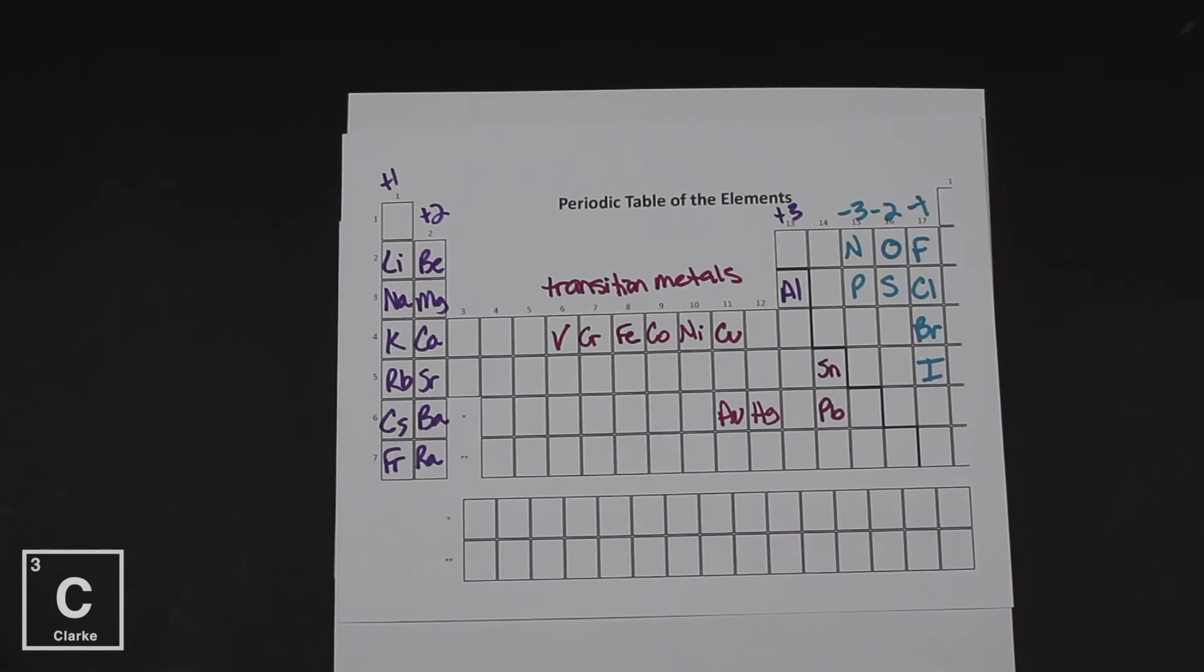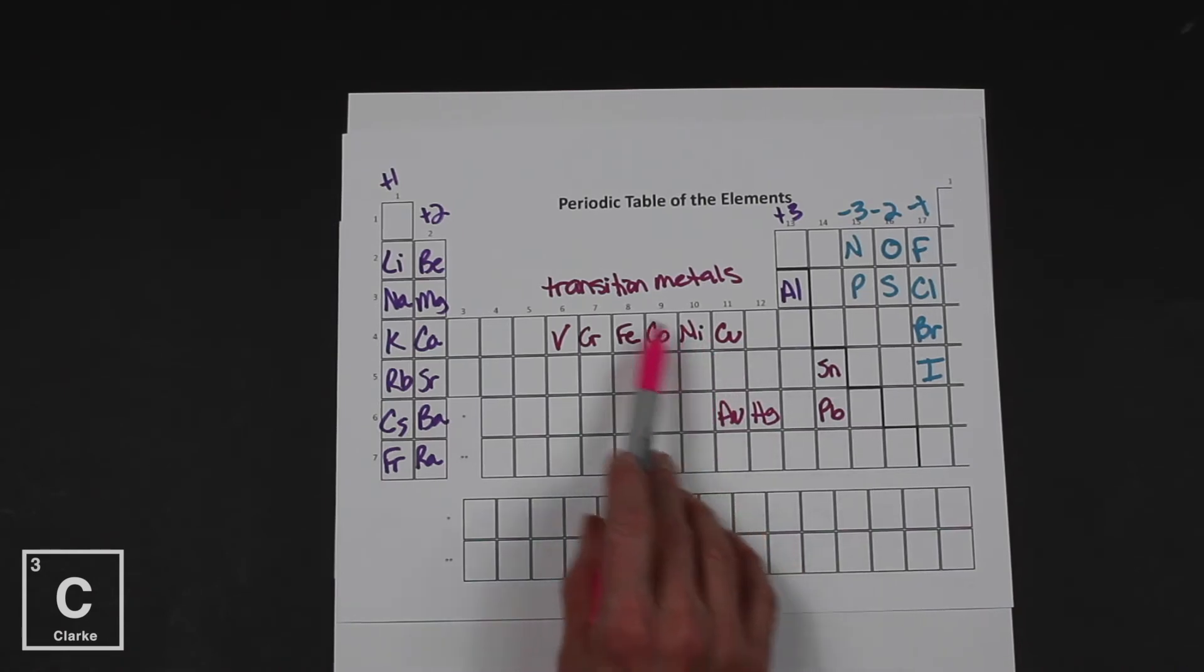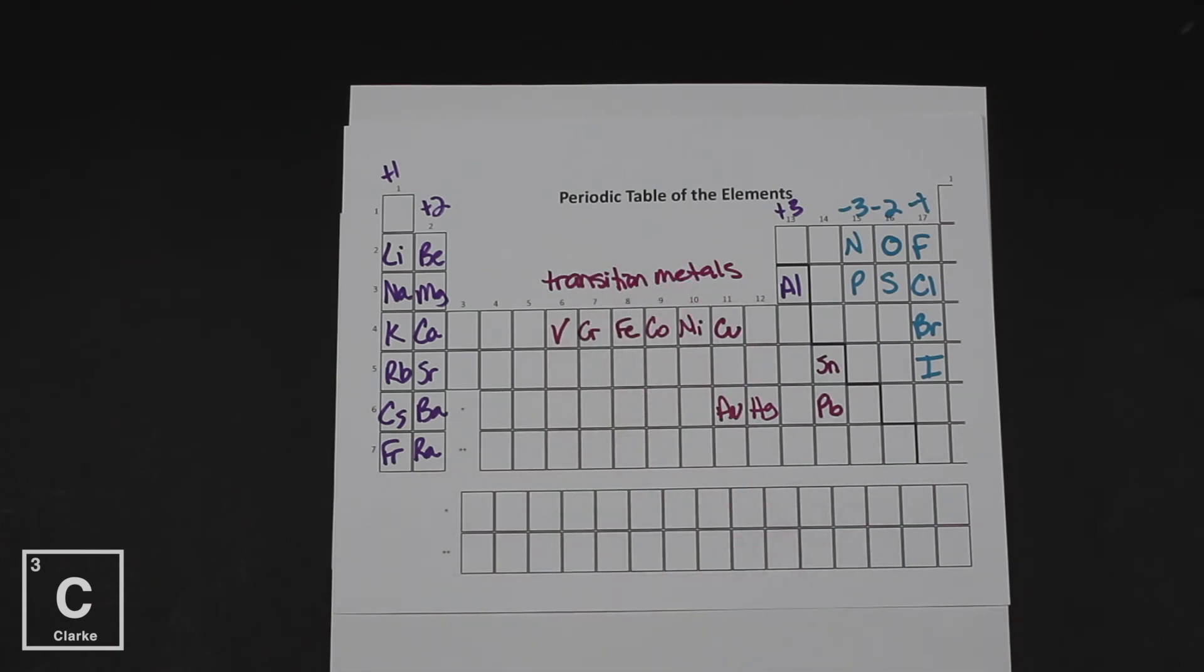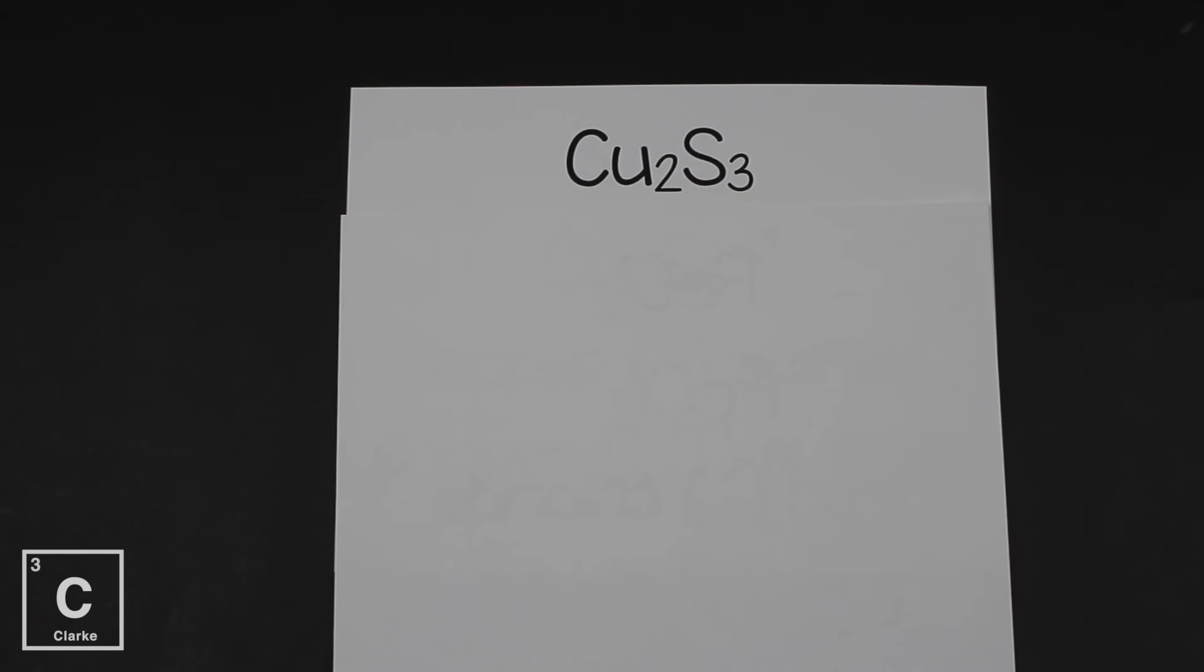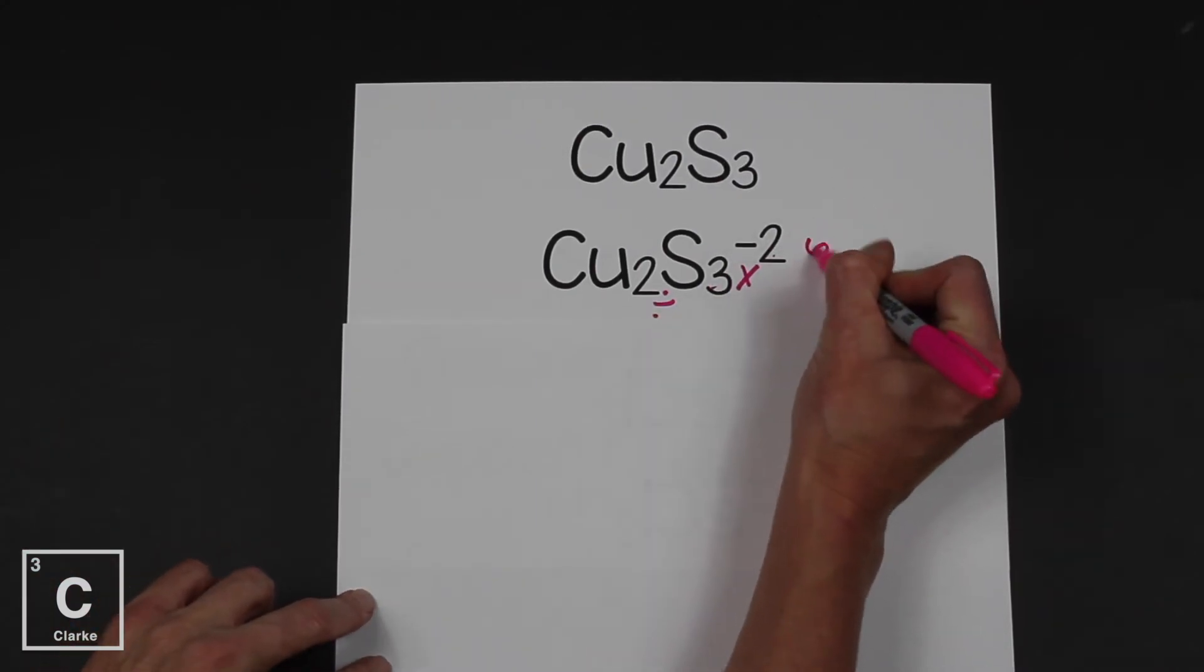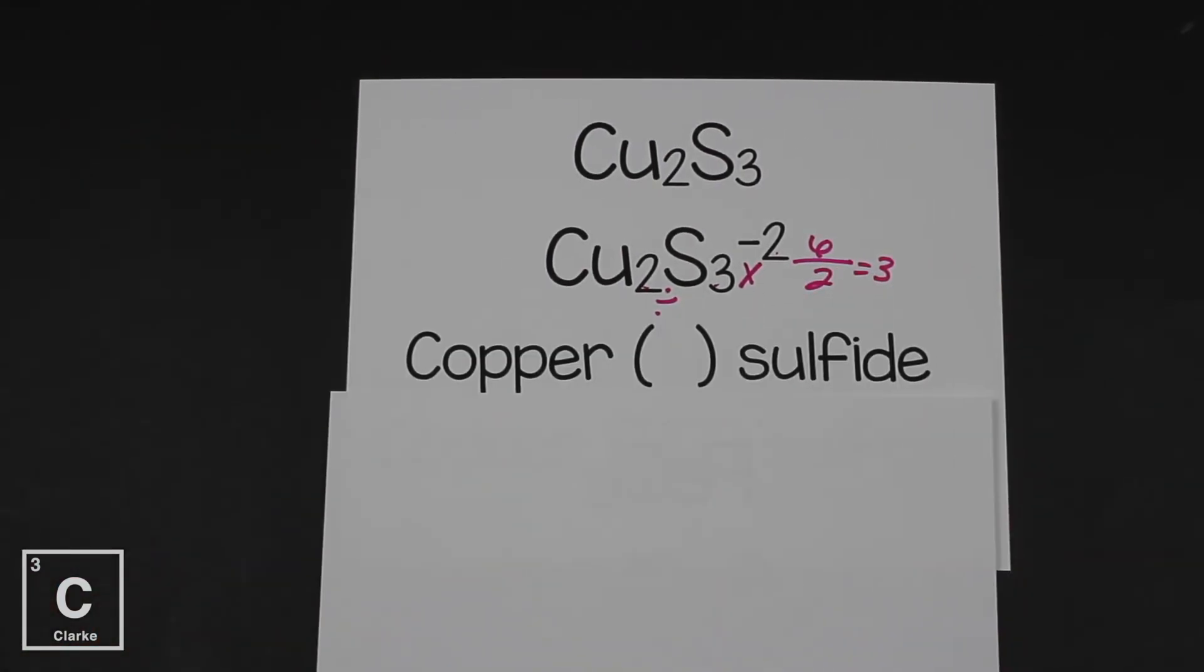Cu2S3. And if we look at Cu, copper, on the periodic table, we see that copper is a transition metal. We don't know its charge. We've got to figure it out. We know that Cu is copper and S is sulfur. So to figure out the charge on copper, we've got to use sulfur. Sulfur's charge is minus two because it's in group 16. So remember our shortcut. We're going to take the oxidation number of sulfur. We're going to multiply it by how many sulfurs we have. So two times three. Two times three is six divided by two is three. So we know we're going to have copper. We need a Roman numeral. S is sulfide. And that Roman numeral is going to be three.